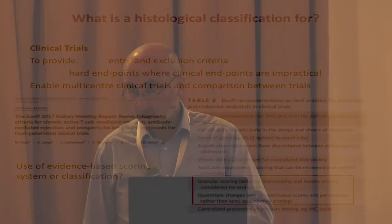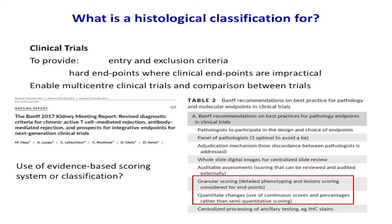If you remember this half of this one slide, you've probably learned the central message of my talk. Whatever classification is being used by your pathologist, consistently the best predictor of renal survival in the biopsy is the extent of chronic damage — percentage global glomerulosclerosis, and even more so, the percentage of the cortex showing interstitial fibrosis and tubular atrophy.